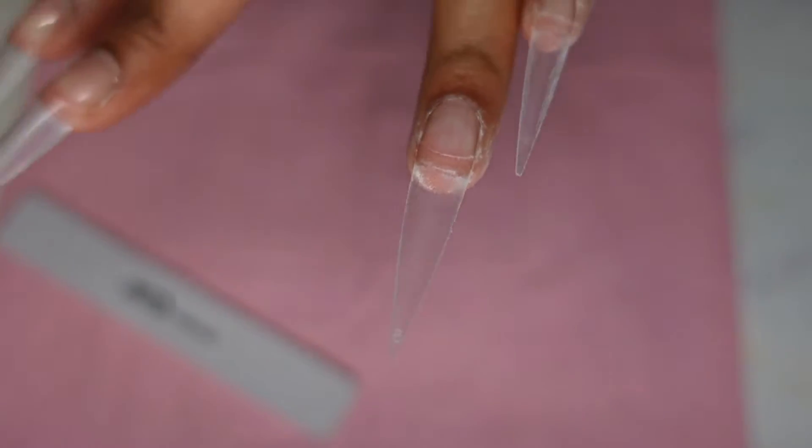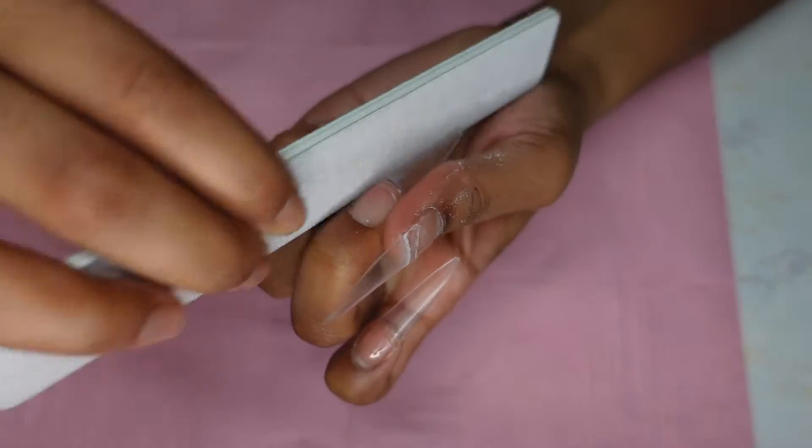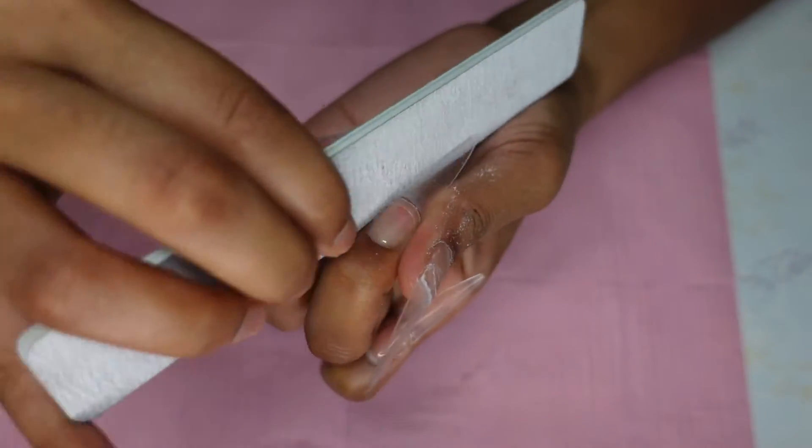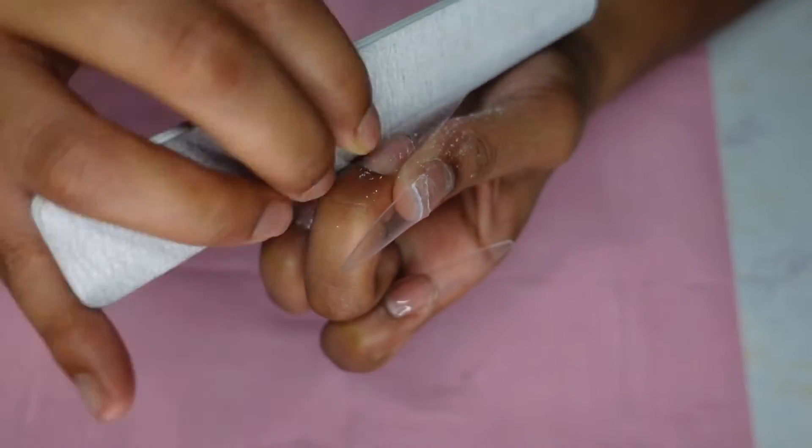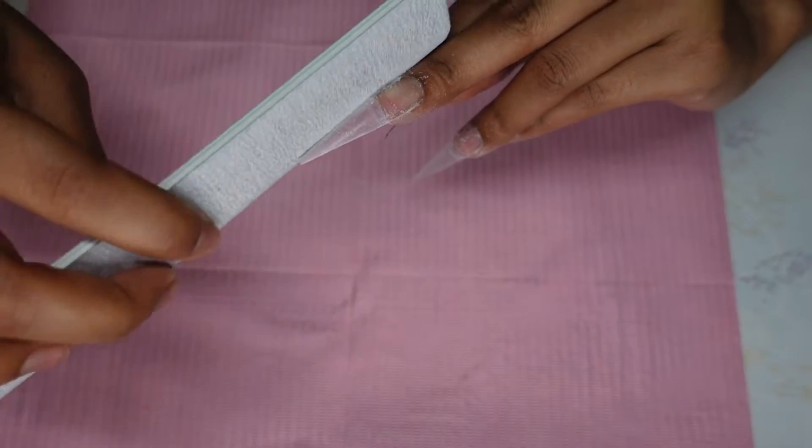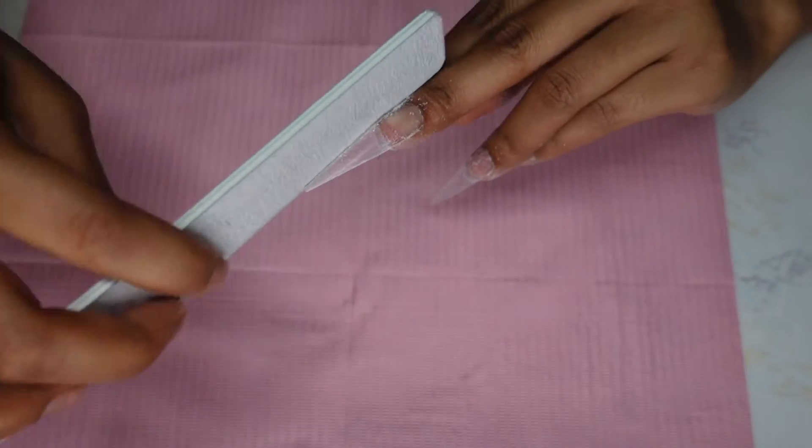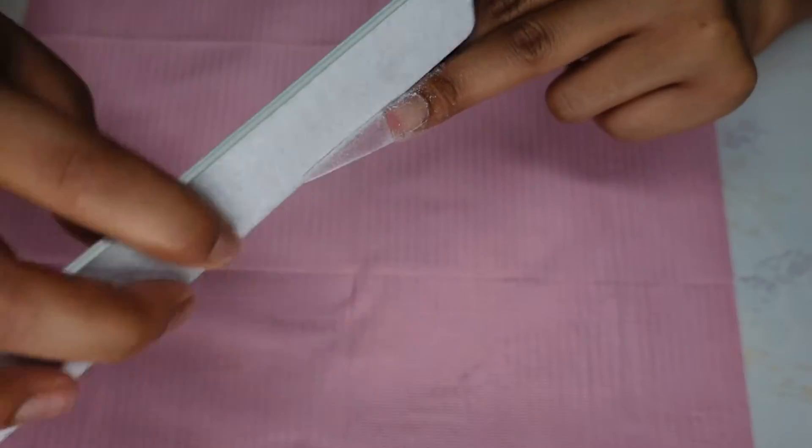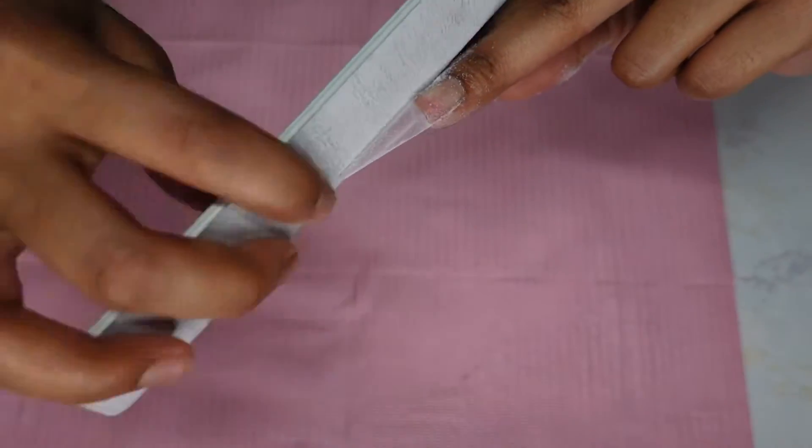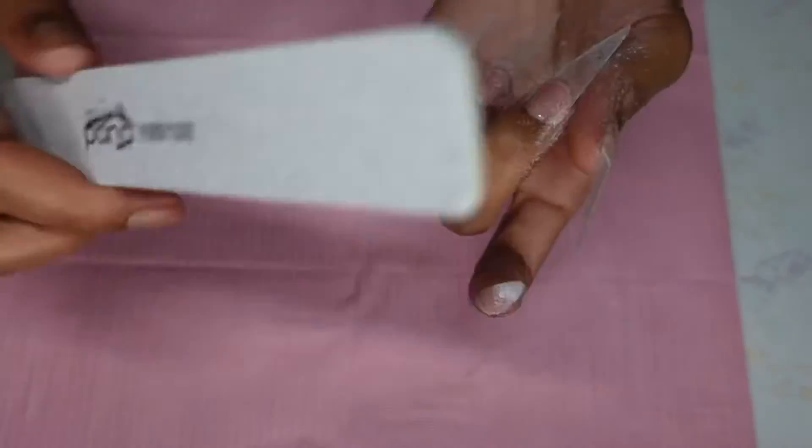You want to make sure you're really getting everything real crisp. This is important before your application because it helps so that reshaping is not so much to do. You're just going back and forth.